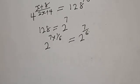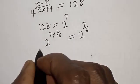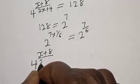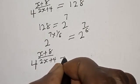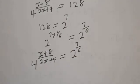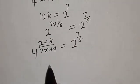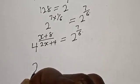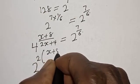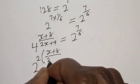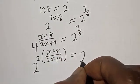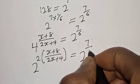Our equation now has 4 raised to power (x+8)/(2x+4) equal to 2 raised to power 7 over 6. Since 4 equals 2 squared, this can be expressed as 2 raised to power 2(x+8)/(2x+4) is equal to 2 raised to power 7 over 6.